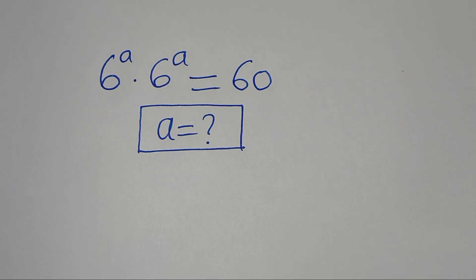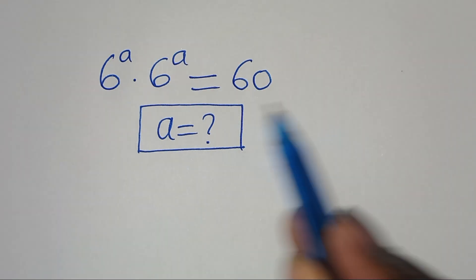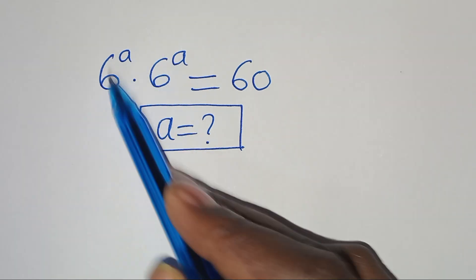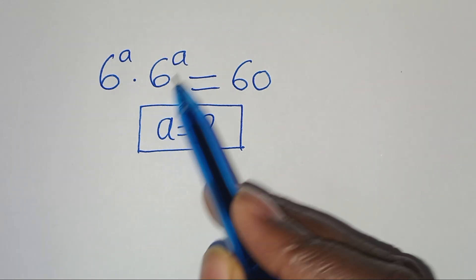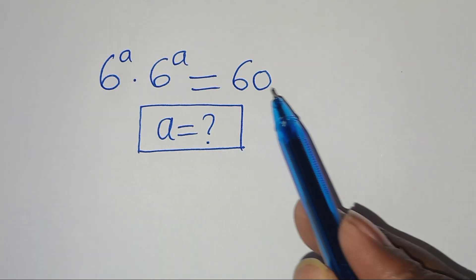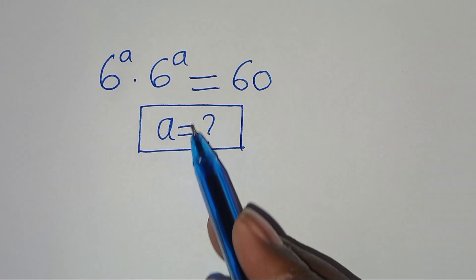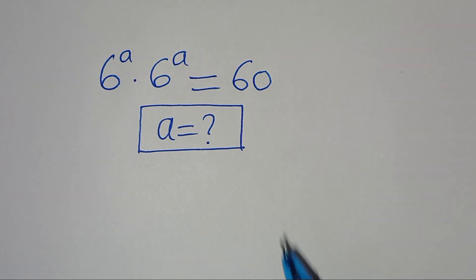Hello everyone, you are welcome to solve this nice exponential equation, which is 6 to the power of a times 6 to the power of a, and this is equal to 60. So what is the value of a?